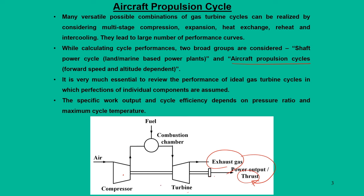This particular cycle — which we call a shaft power cycle — is something like static power plants: gas turbine plants, land engines, marine engines, combined cycle power plants. For aircraft propulsion cycles, we expect the engine to give thrust, forward speed, and altitude dependence, since propulsion cycles are also altitude dependent. Some modifications are needed for conventional gas turbine cycles to be used for propulsion devices.